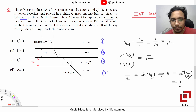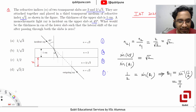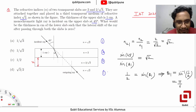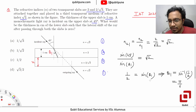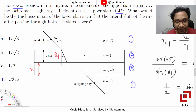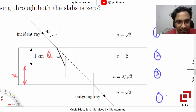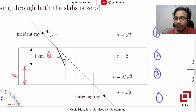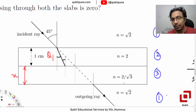So we have successfully obtained θ₁ as 30 degrees. Now because θ₁ is 30, by the alternate angles property this angle will also be 30 degrees. Now look at 2 and 2 by root 3.